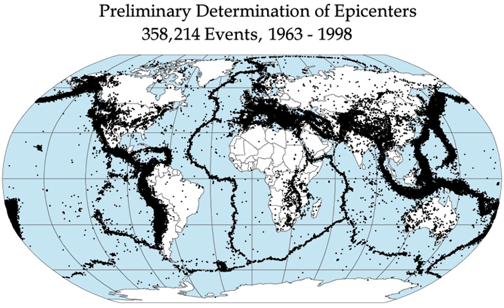In its most general sense, the word earthquake is used to describe any seismic event—whether natural or caused by humans—that generates seismic waves. Earthquakes are caused mostly by rupture of geological faults, but also by other events such as volcanic activity, landslides, mine blasts, and nuclear tests. An earthquake's point of initial rupture is called its focus or hypocenter. The epicenter is the point at ground level directly above the hypocenter.